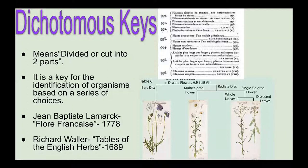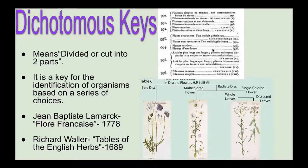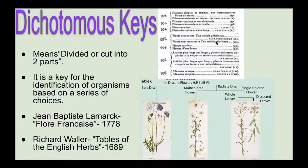There's been some debate over who created the first dichotomous key. The first text-based dichotomous key was created in 1778 by Jean-Baptiste Lamarck, a Frenchman. An Englishman named Richard Waller is credited with creating the first pictorial dichotomous key, back in 1689. So the first pictorial dichotomous key was in 1689 and the first text-based dichotomous key was in 1778.